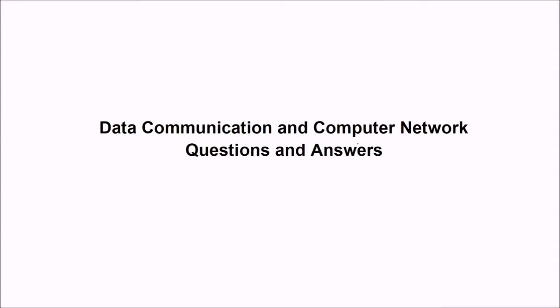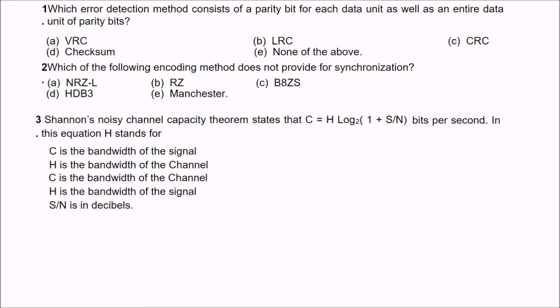Now let us see a few questions and answers in data communication and computer network. The first question is: which error detection method consists of a parity bit for each data unit as well as an entire data unit of parity bits?